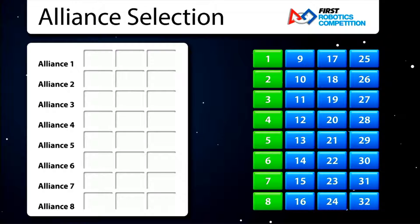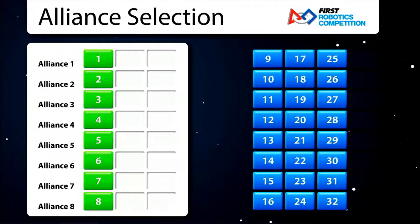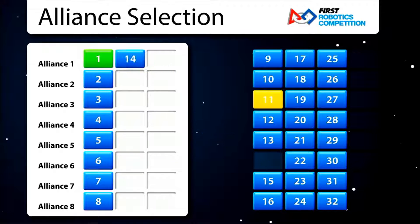The top 8 teams move into the team captain positions of the playoff alliances. The number 1 team can select any team at the event to join their alliance. If the selected team declines the invitation, then another team is chosen until one accepts.